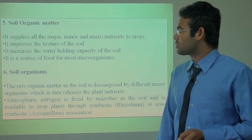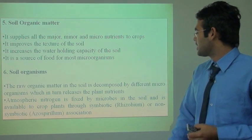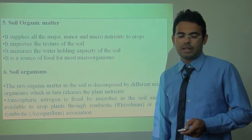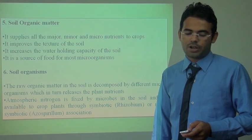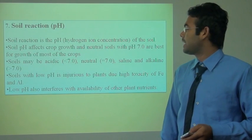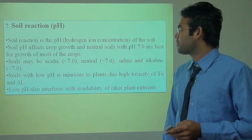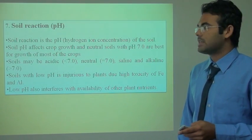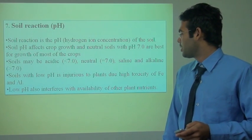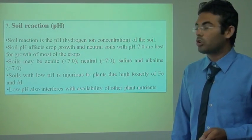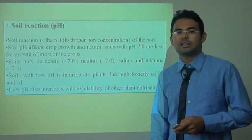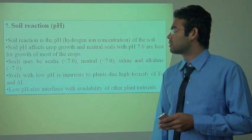Soil organisms decompose raw organic matter in the soil through different microbes, releasing plant nutrients. Atmospheric nitrogen is fixed in the soil by microbes and made available to crop plants through symbiotic and non-symbiotic associations. Soil reaction refers to soil pH, with three general types: acidic (pH less than 7), neutral (pH 7) and basic or saline/alkaline (pH greater than 7). Low pH soils have high toxicity of iron and aluminium and interfere with availability of other plant nutrients. Neutral soil with pH 7 is best for most agricultural and fruit crops.